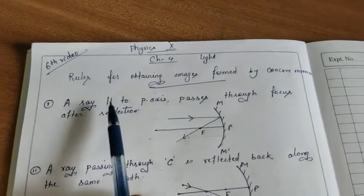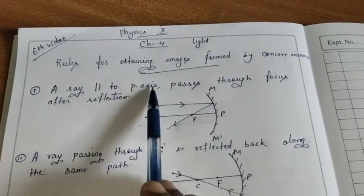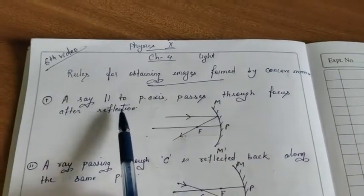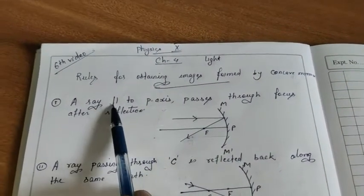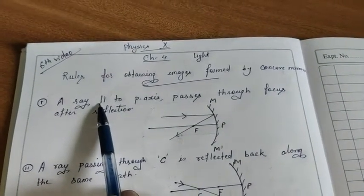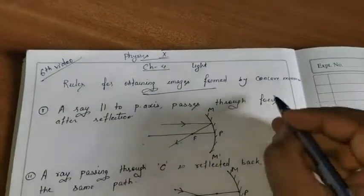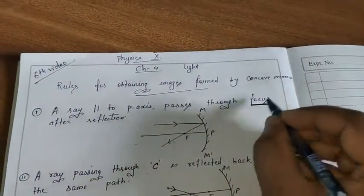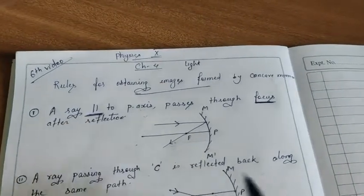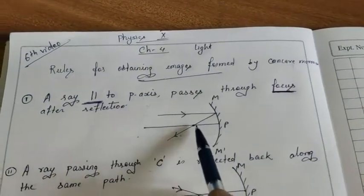Rule 1: A ray which is parallel to the principal axis passes through the focus after reflection. Agar ek ray principal axis ke parallel hai, toh reflection ke baad woh focus se pass karega.